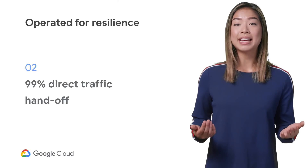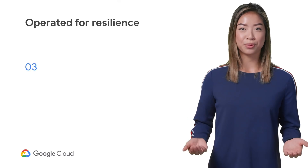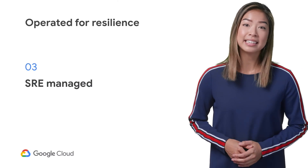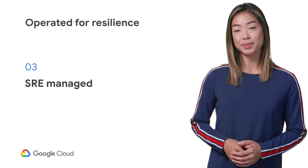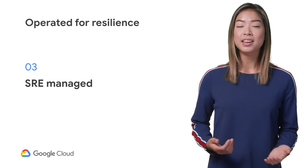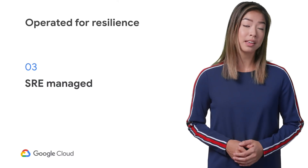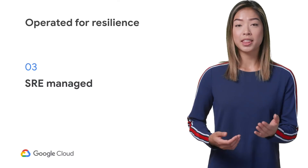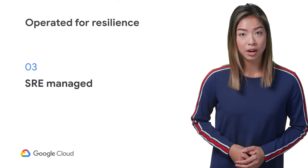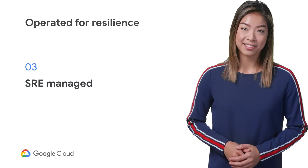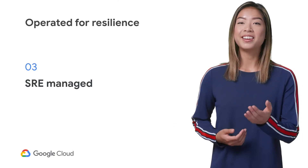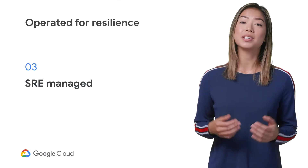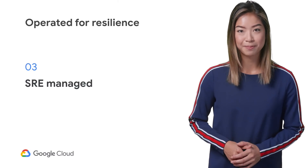We also have network site reliability teams stationed around the world. Their role is to respond and adapt to network events, improving systems and processes so that reliability and performance of the network continues to improve over time. When an issue occurs, they identify root causes and implement new workarounds. In other words, they're here as first responders to make sure Google Cloud customers have a consistent and reliable experience.